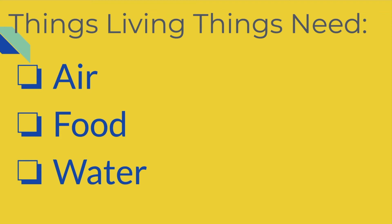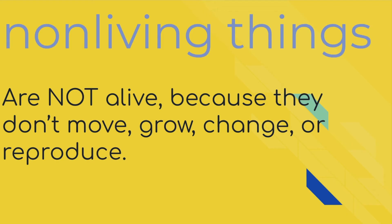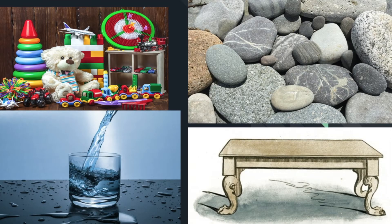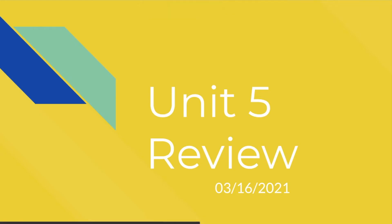Now, there are living things but there are also non-living things. Non-living things are not alive. They don't move, they don't grow, they don't change or reproduce. Non-living things include examples like toys, rocks, water, or a table. Non-living things are used every day, but they don't need to survive — they don't need water, food, or air to be able to survive because they are non-living.